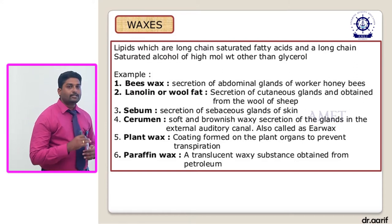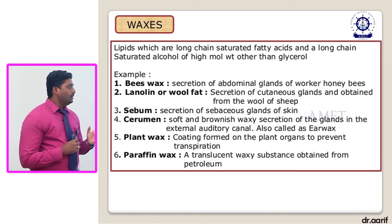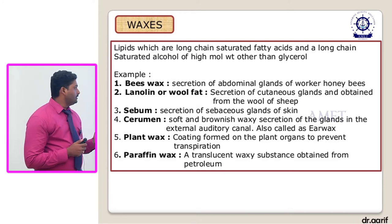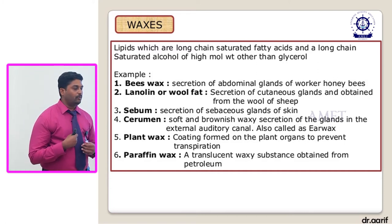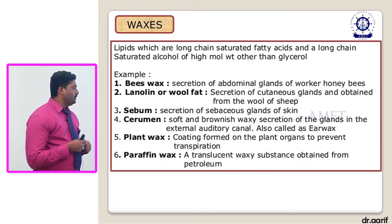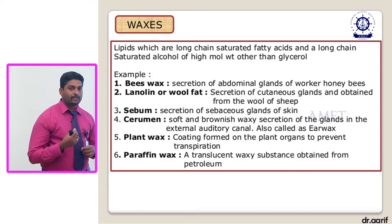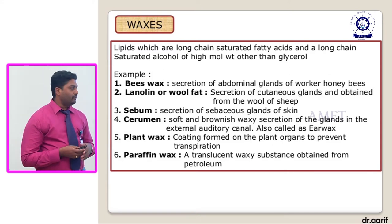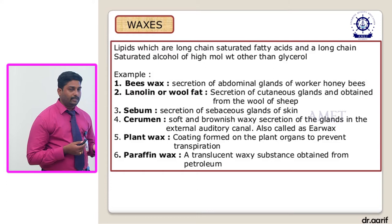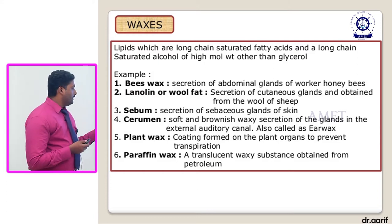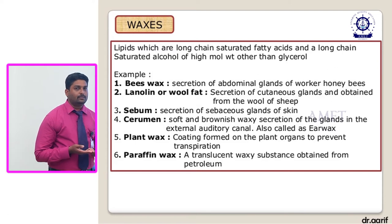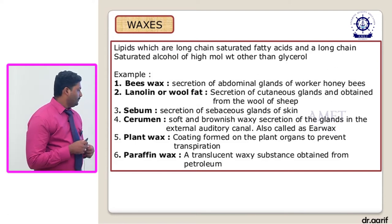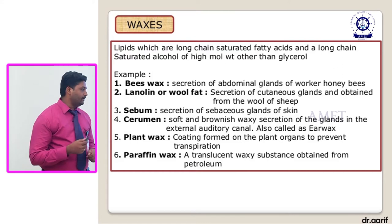Lanoline or wool fat is a secretion of the cutaneous glands obtained from the wool of sheep. Sebum is a secretion of the sebaceous glands from our skin; this soft brownish waxy material is also produced in our ear lobes and is called ear wax from the external auditory canal. Plant wax forms a coating on plant organs to prevent transpiration, responsible for the process of photosynthesis. Paraffin wax is a translucent waxy substance obtained from petroleum.